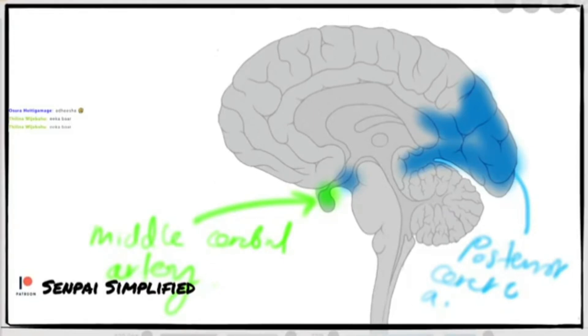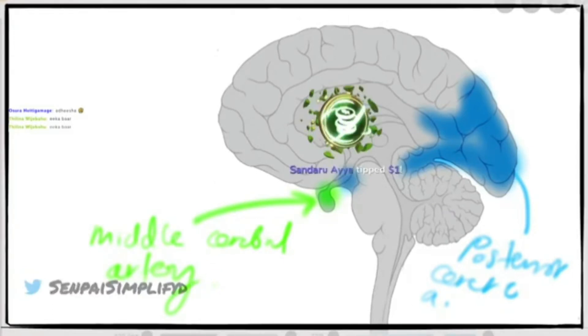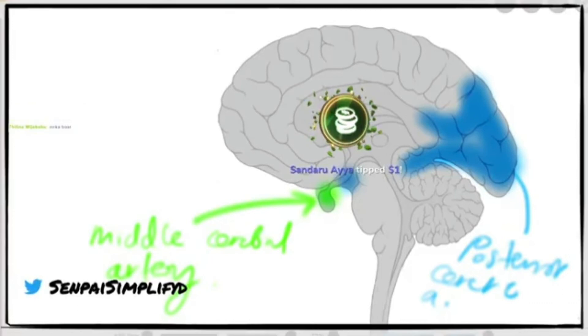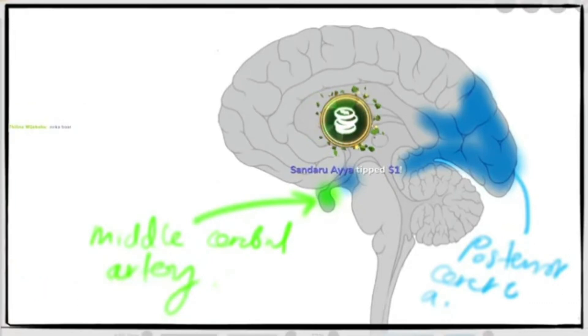As I told you, the anterior cerebral artery has the majority of the inner surface — the medial surface.